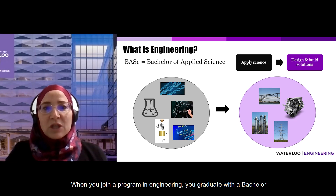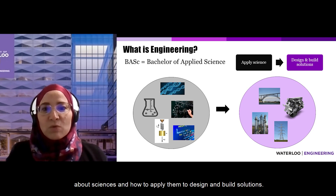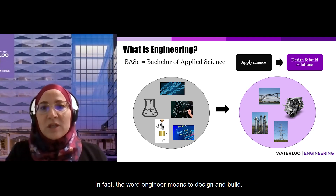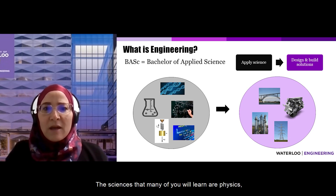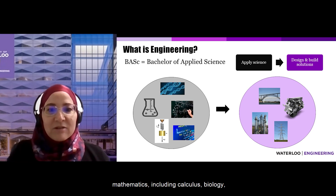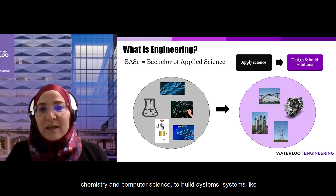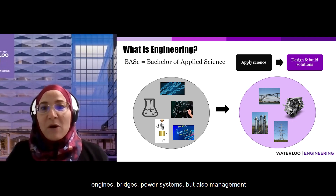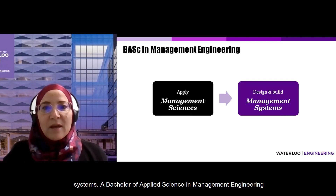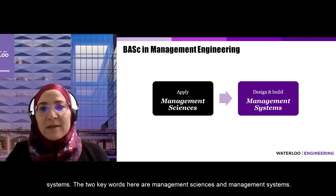When you join a program in engineering you graduate with a Bachelor of Applied Science, which means you will learn about sciences and how to apply them to design and build solutions. In fact, the word engineer means to design and build. The sciences many of you will learn are physics, mathematics including calculus, biology, chemistry, and computer science — to build systems like engines, bridges, power systems, and also management systems. A Bachelor of Applied Science in Management Engineering applies management sciences to design and build management systems. The two keywords are management sciences and management systems.